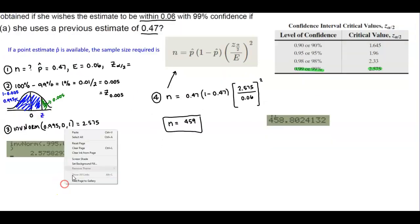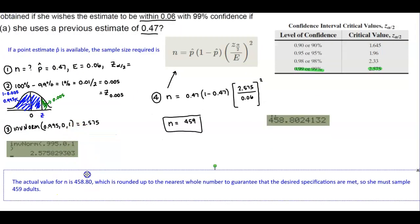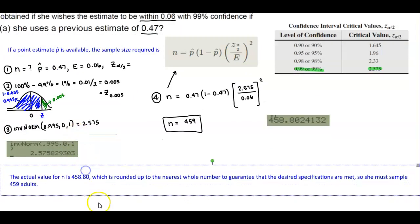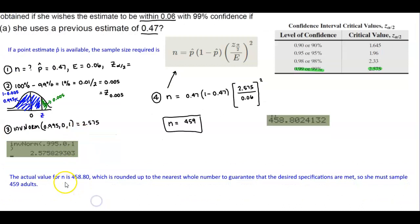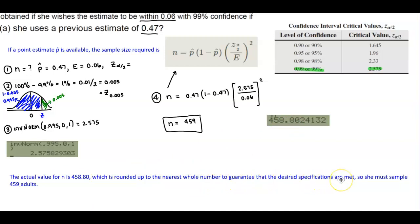To summarize Part A: the actual value we got for n is 458.80, which is rounded up to the nearest whole number to guarantee that the desired specifications are met. So she must sample 459 adults.